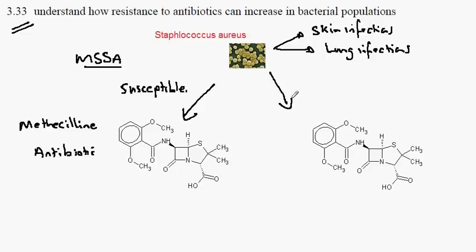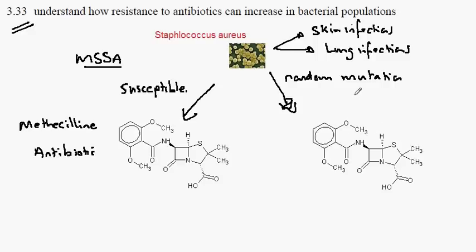What happened was that there was a random mutation to the genome of Staphylococcus aureus. When the antibiotic Methicillin was applied, the bacteria did not die. This was given the name of the resistant form.